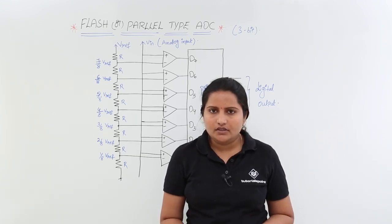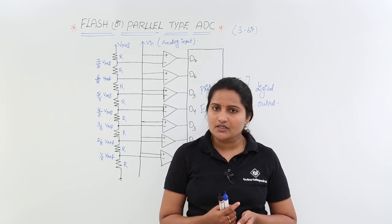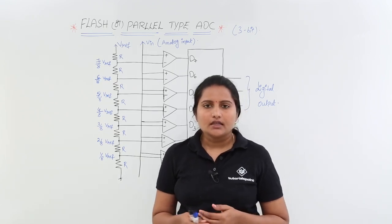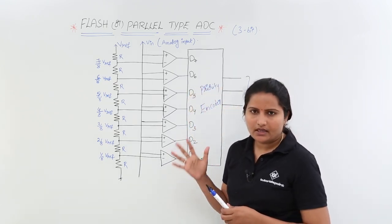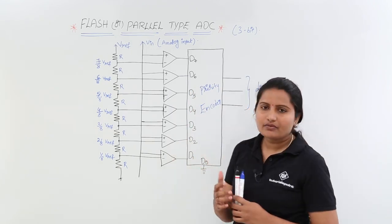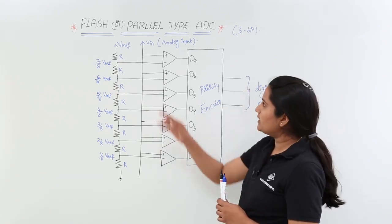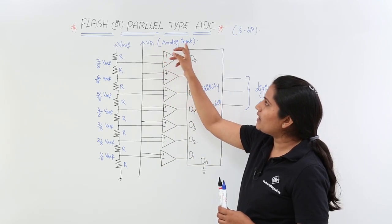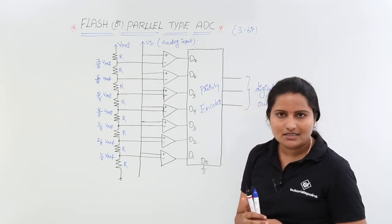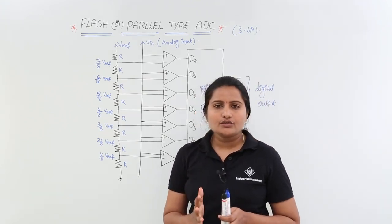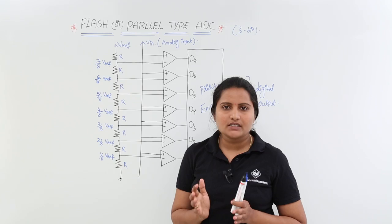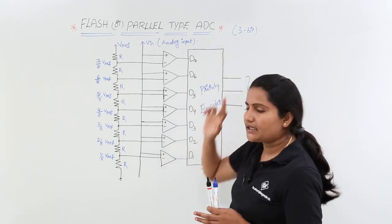If we can convert N-bit data in a single clock pulse, that is very beneficial in applications requiring the fastest operation. For that purpose we designed the flash or parallel type ADC. This will convert your analog signal into digital signal. The analog input enters here and the digital output comes from a priority encoder. First, you need to know how many bits are required — I am considering 3-bit operation.